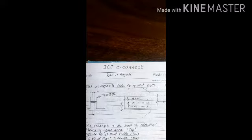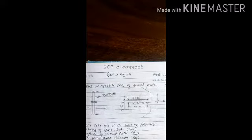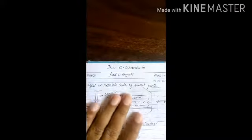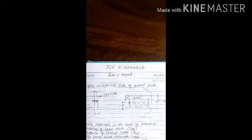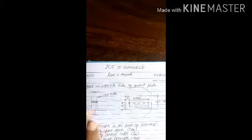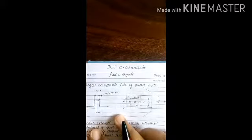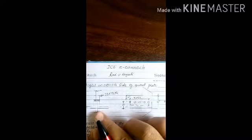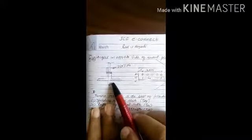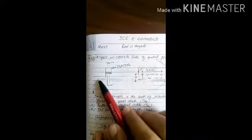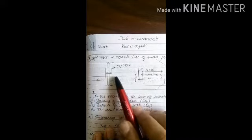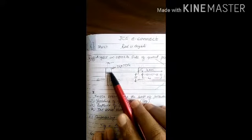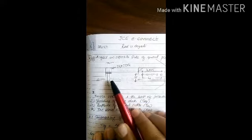Welcome to JCE Connect. In this lecture, I'll be solving a problem on tension and design of tension members. In the previous lecture, we solved a single angle connected to the gusset plate. In this lecture, double angles are given connected to opposite sides of the gusset plate — that is, back to back.